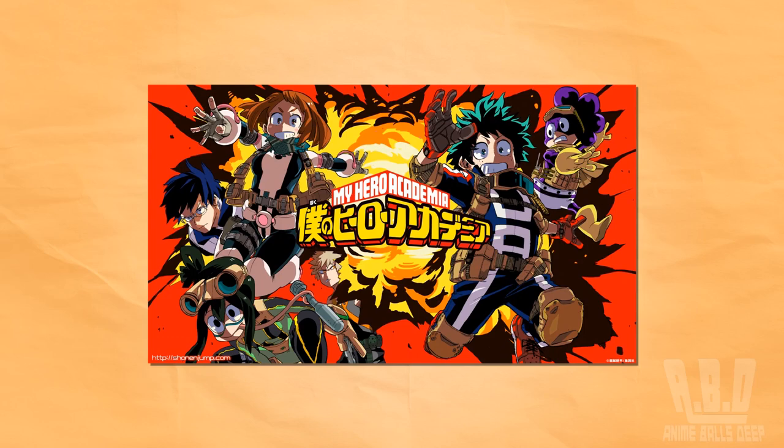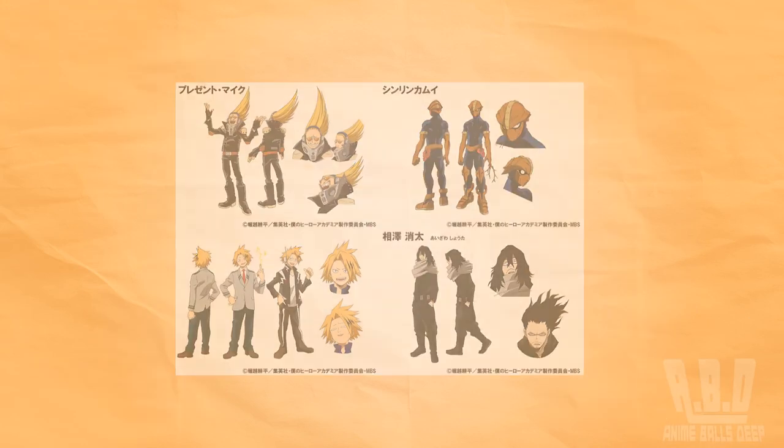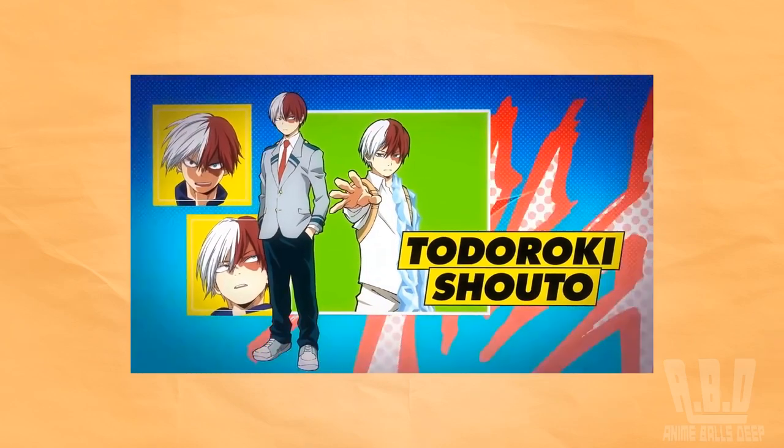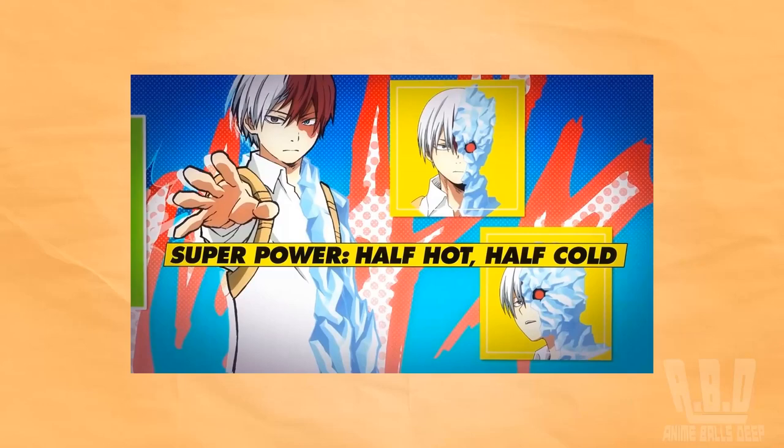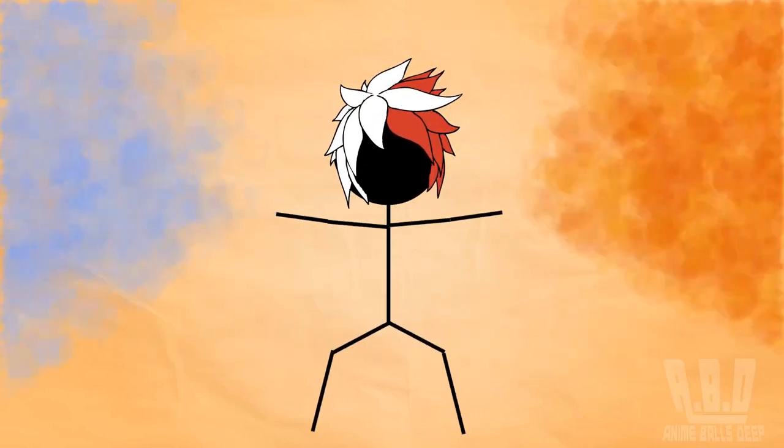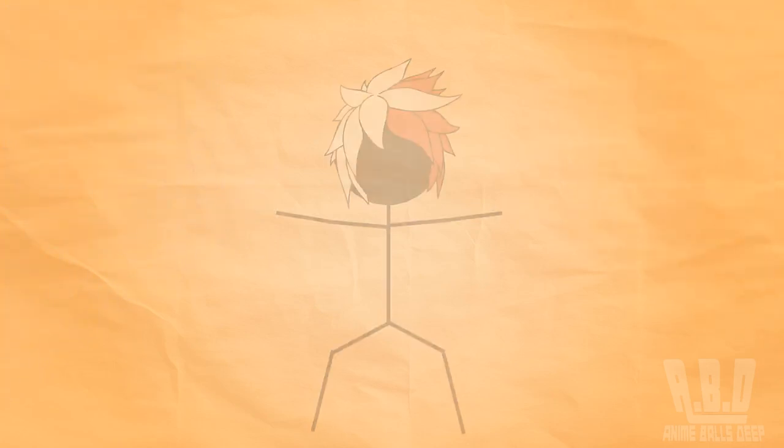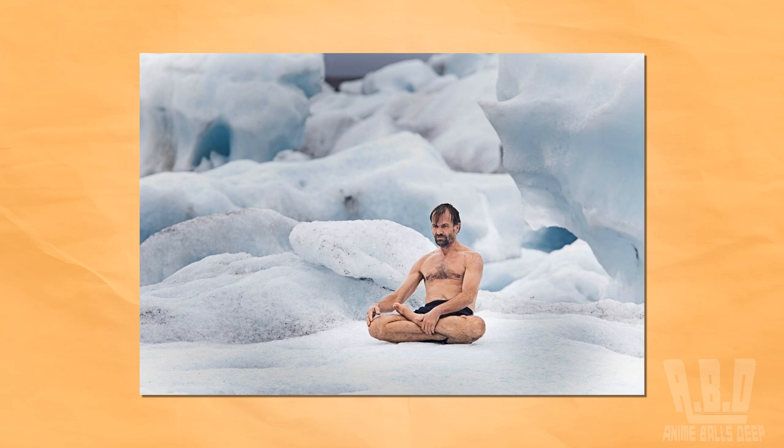So with Boku no Hero Academia's first season recently finishing, there were a lot of superpowers that interested me. But one specific ability that caught my attention was Shoto Todoroki's, who was able to create fire and ice, and thereby change his body temperature at will. This variability is actually possible within humans, but obviously to a much lesser extent, and without the added bonus of being able to create fire and ice. Wim Hof is the most famous person who was able to do this.